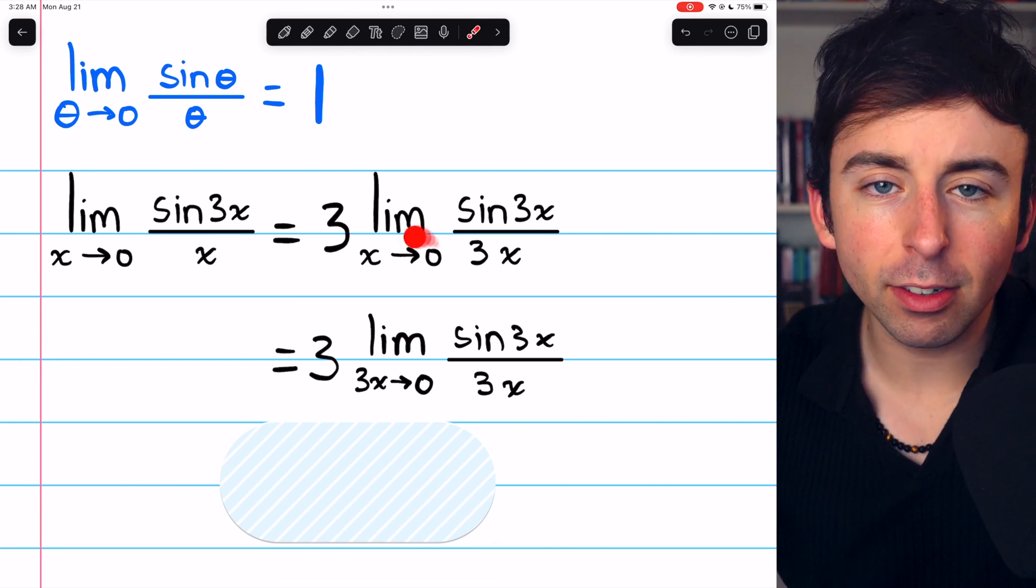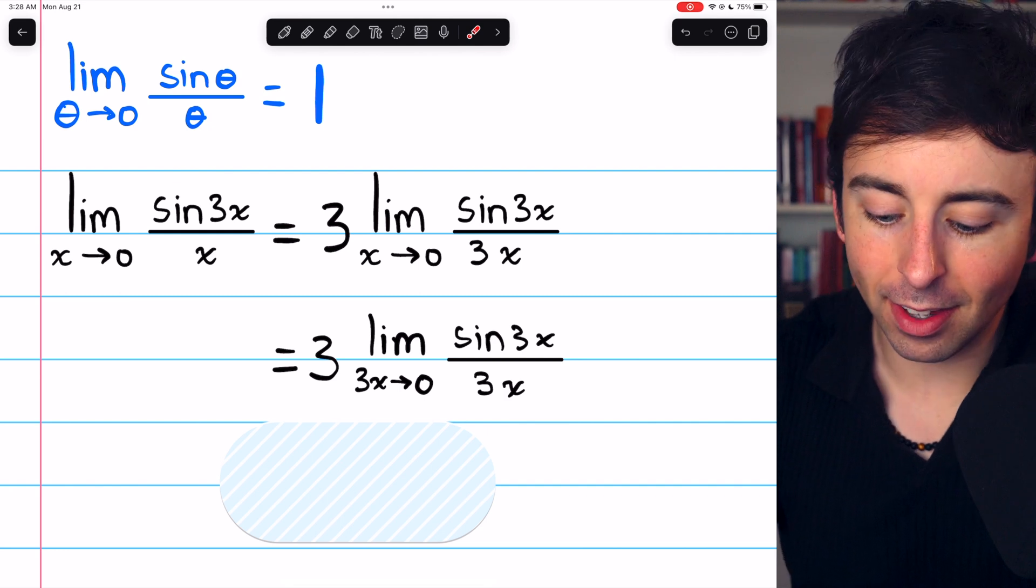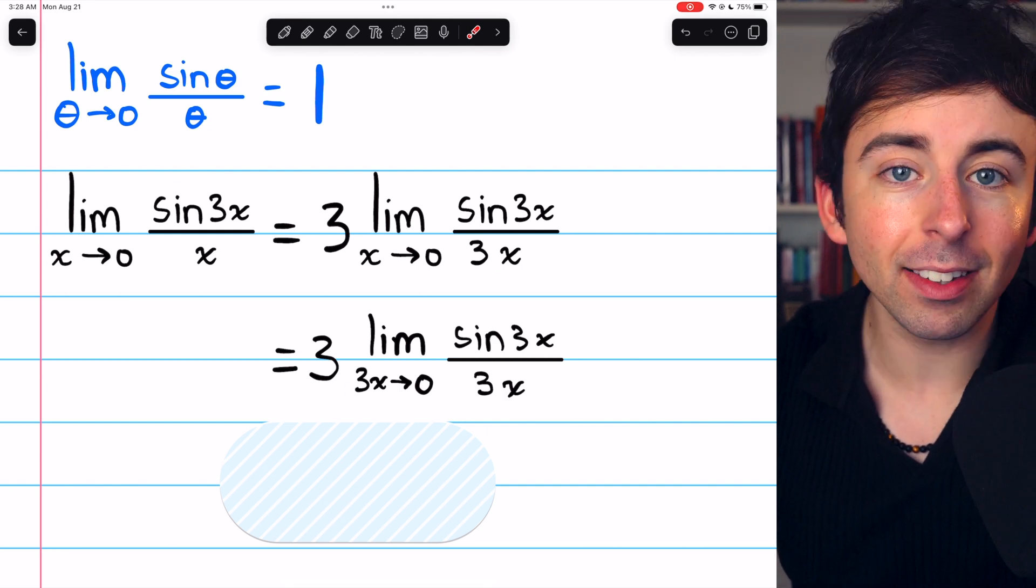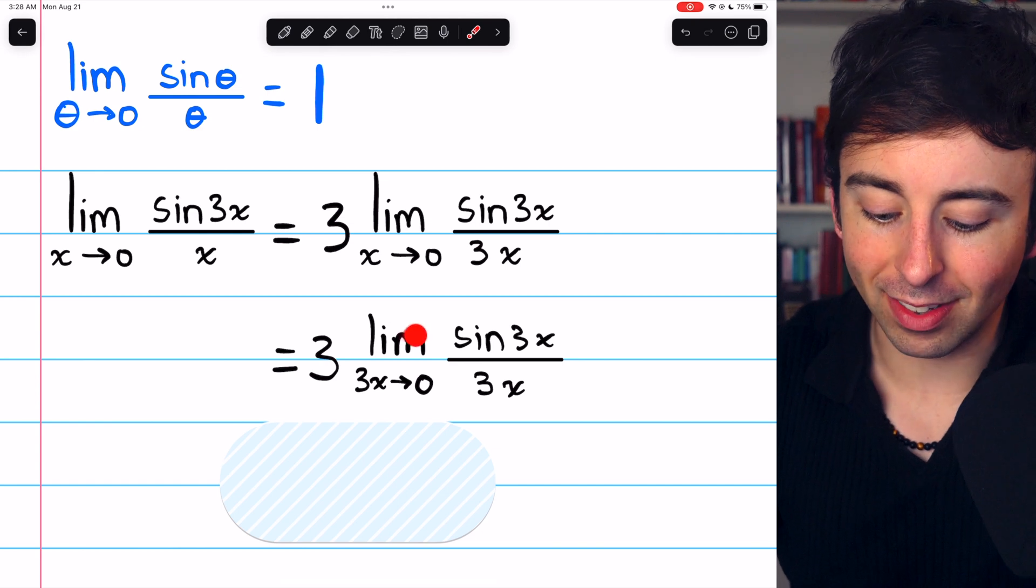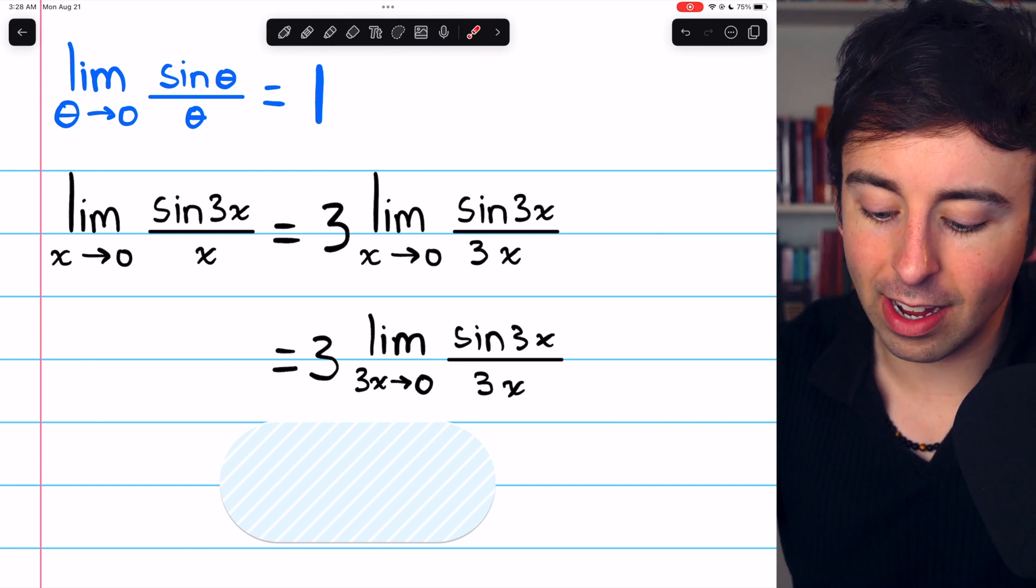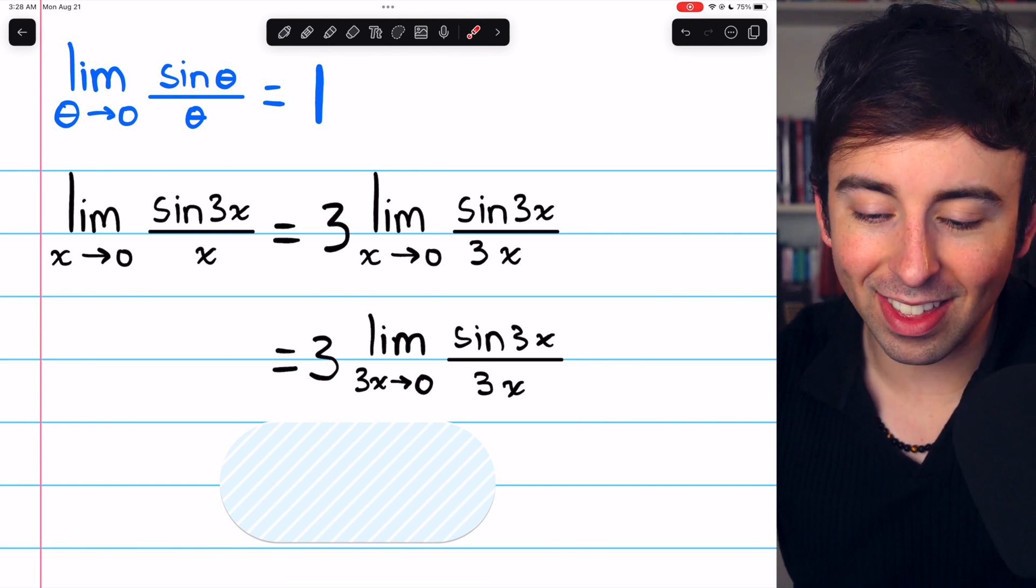And although we have x approaching 0, that's the same as 3x approaching 0. And thus, what we have is the limit of sine of a thing over a thing as that thing approaches 0.